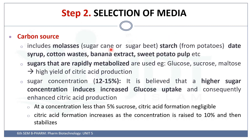Now let's see step 2, the selection of media. Carbon sources are usually obtained from molasses — sugarcane molasses, sugar beet molasses — potato starch, date syrup, cotton waste, banana extract, and sweet potato pulp. Sugars that are rapidly metabolized are used as carbon sources, such as glucose, sucrose, and maltose, because they give a high yield of citric acid. As the concentration of sugar increases, glucose uptake increases and consequently citric acid production is enhanced.